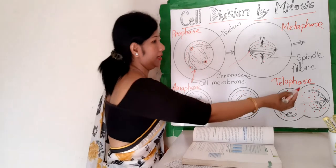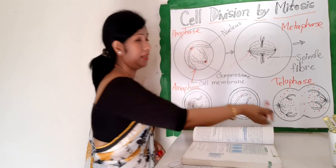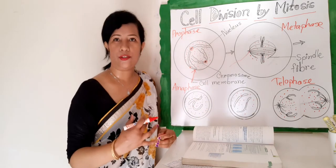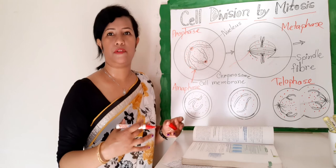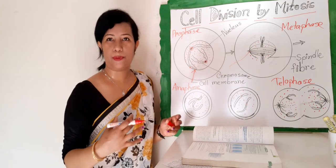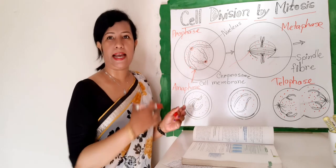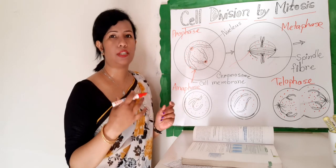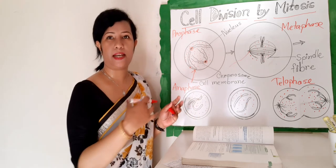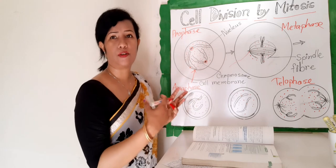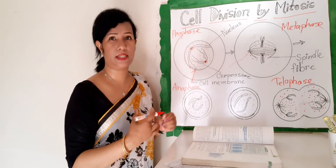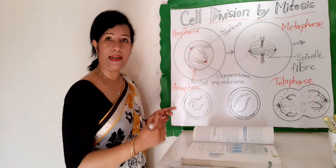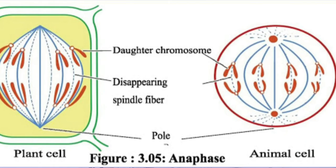The spindle breaks down. Cytokinesis is the division of the cytoplasm and cell into two, by constriction from the edge of the cell.